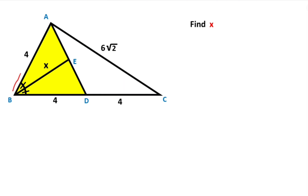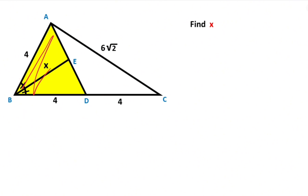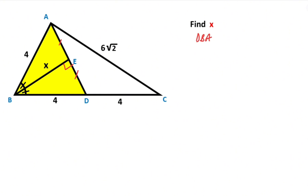First step: notice that these two lengths are equal and we have an angle bisector line here. That means triangle DBA is an isosceles triangle. So here must be equal to 90 degrees and these two parts must be equal. Triangle DBA is an isosceles triangle.